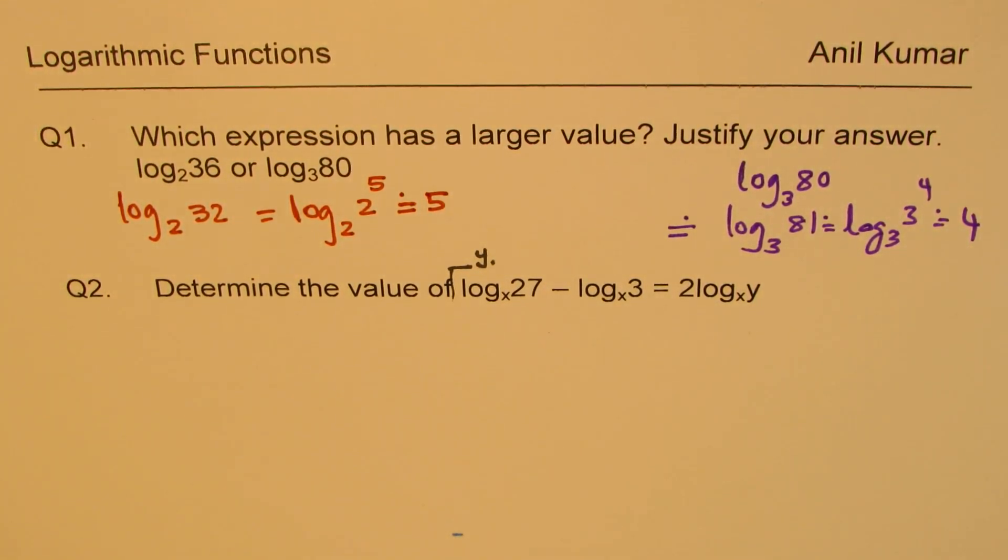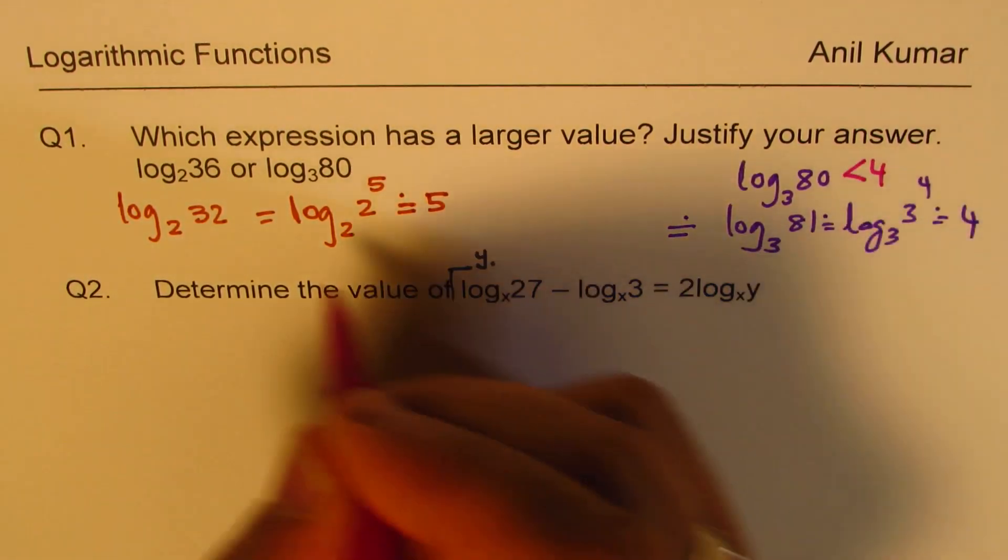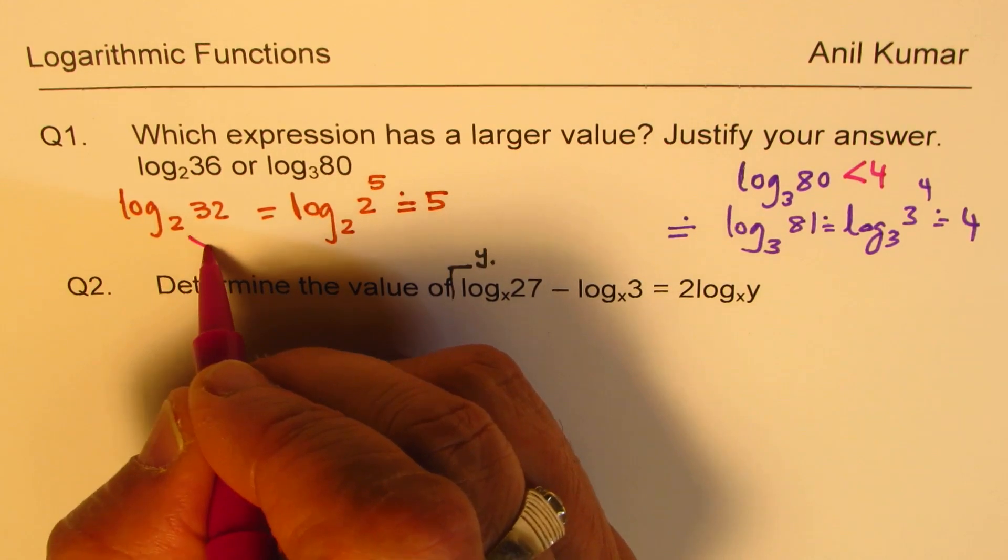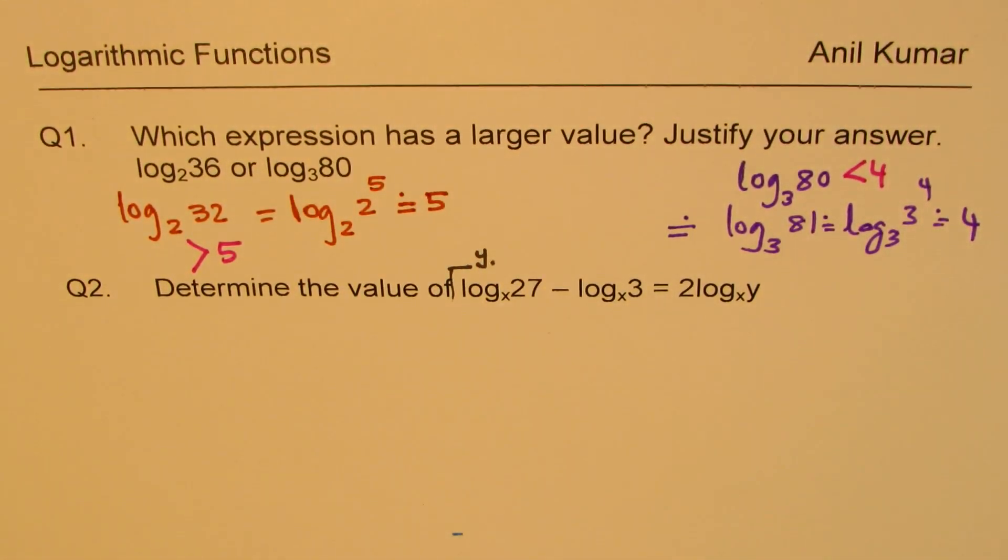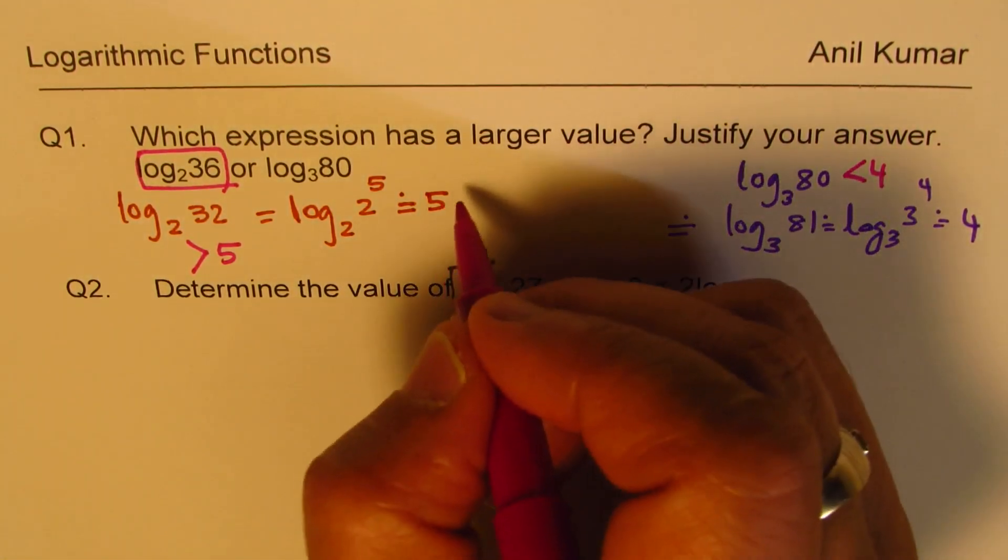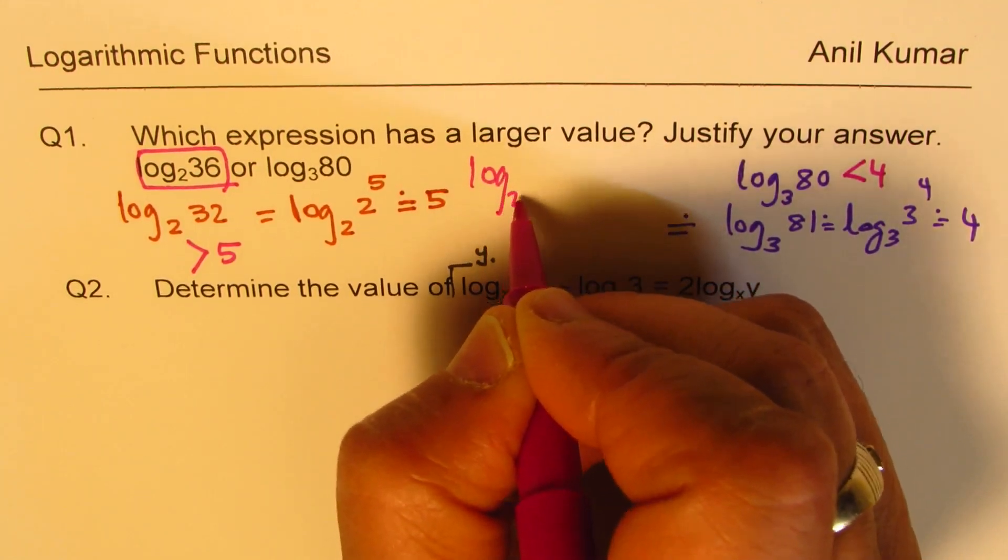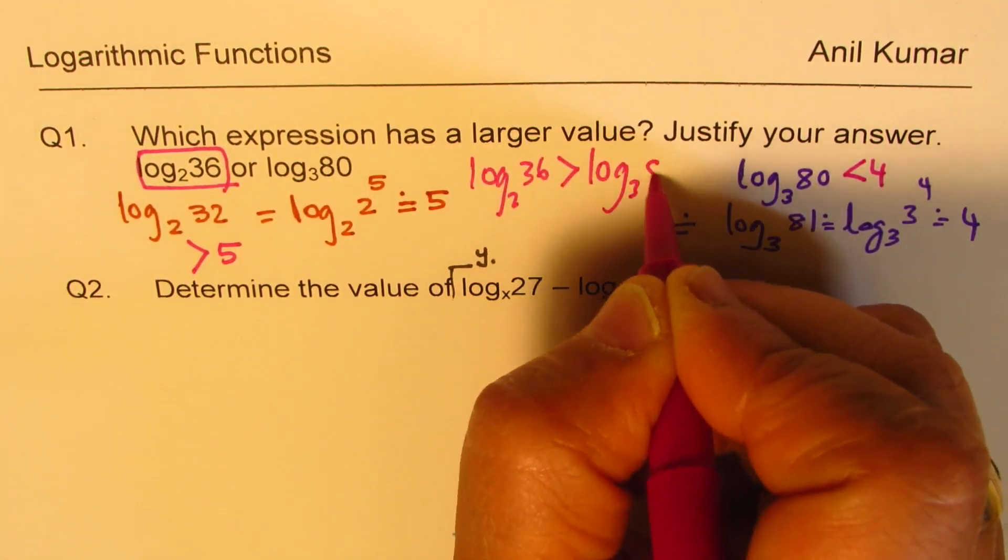So what we see here is that this value is less than 4, and this value here is greater than 5. Which expression has a larger value? Clearly, this expression has a larger value. So we know that log to the base 2 of 36 is greater than log to the base 3 of 80.